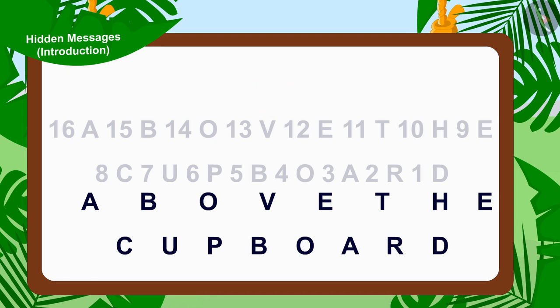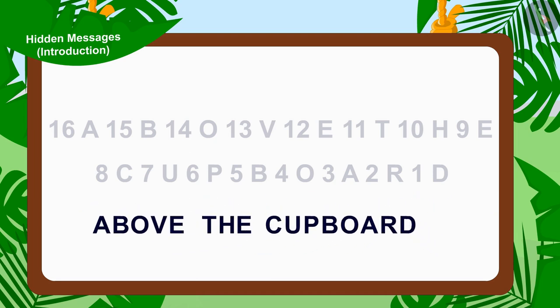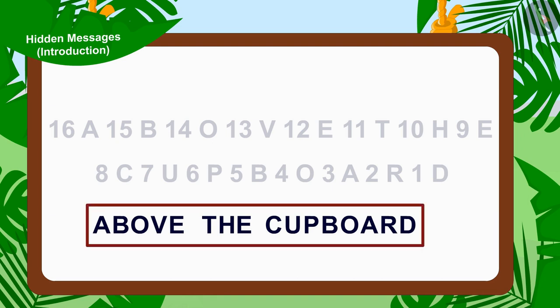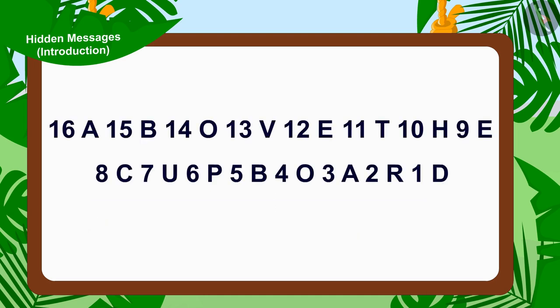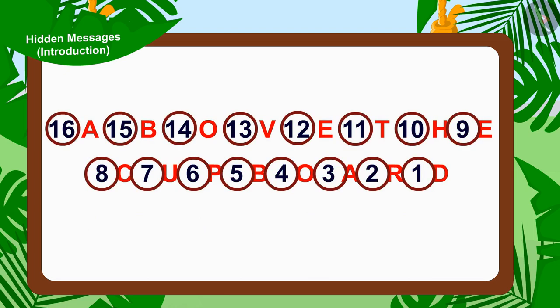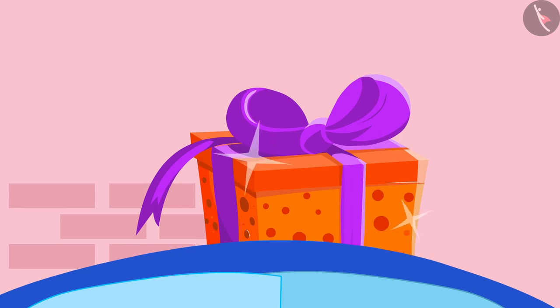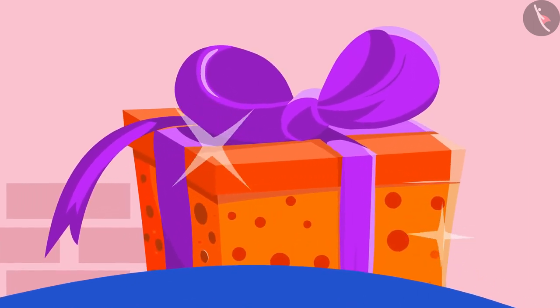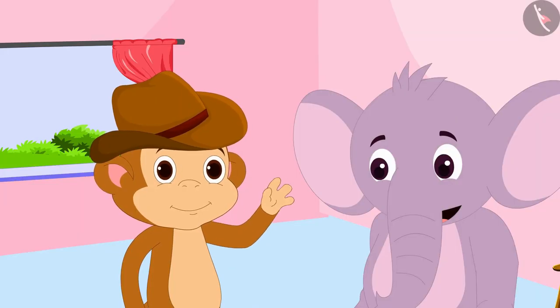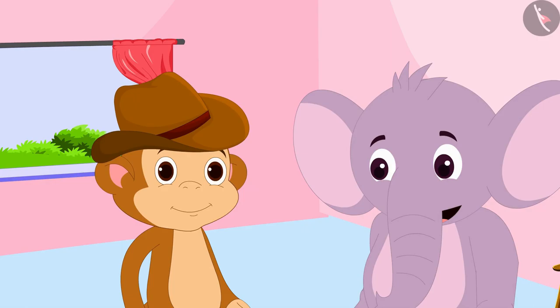Yes! The hidden message here is above the cupboard. Children, this too is a hidden message made from alphabets. Here, in this hidden message, Appu has hidden the alphabets in between the numbers in such a way that there is one alphabet written after every number. When Baban quickly jumped on top of his cupboard, he saw that there was a gift wrapped in a shiny paper there. Appu had actually hidden a cap as a gift for him there.